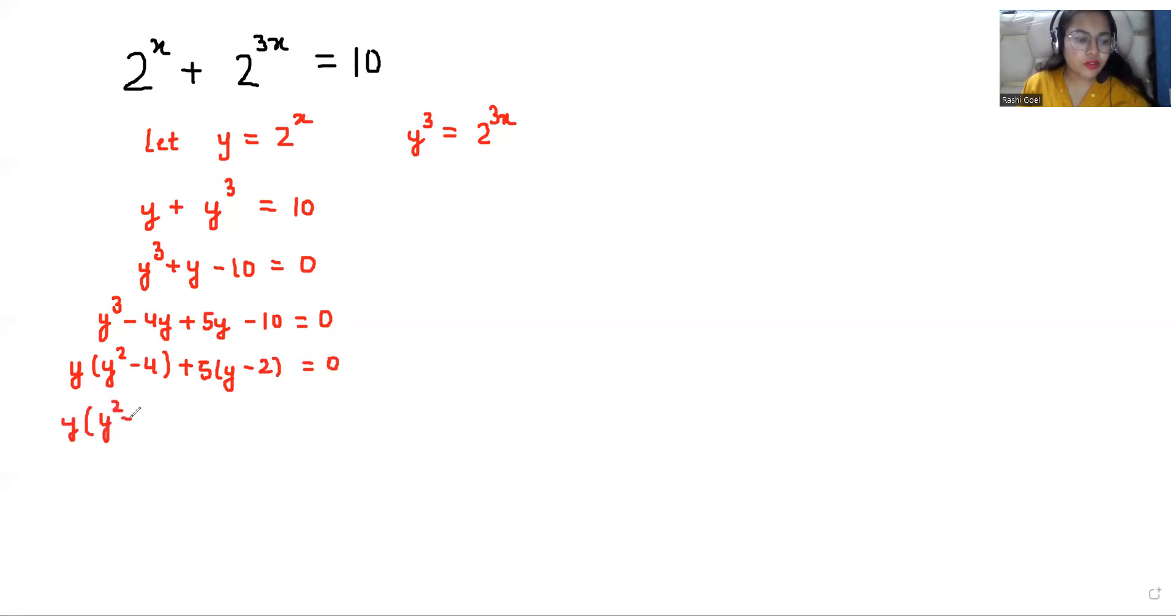So y(y^2 - 4) + 5(y - 2) = 0. Now, this y^2 - 2^2, we can use the formula a^2 - b^2 as (a + b)(a - b). I am going to replace this and write (y - 2)(y + 2) + 5(y - 2).